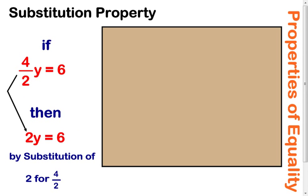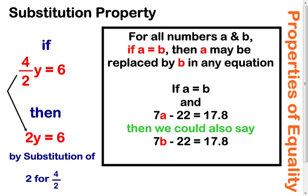Now the substitution property. A little lengthy, I know, but it's really a pretty short property. It's just telling you that if you know that two numbers are equal, in this case we have our A and our B being equal to each other, then A may be replaced by B in any equation. In other words, just wherever you see an A, you could put a B. So in the example here, we have 7A minus 22 equal to 17A. But because A and B were equal to each other up here, we can take that A down here and replace it with B. And now you have 7B minus 22 equal to 17A.